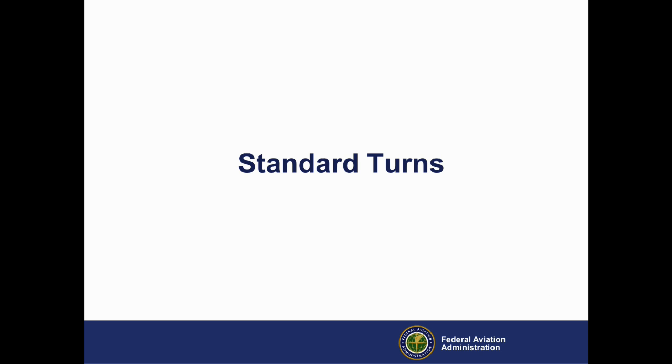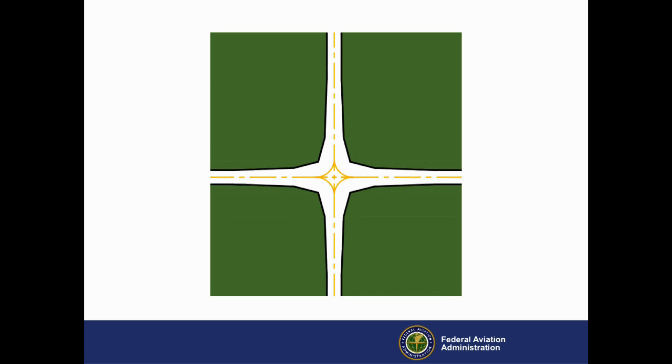Standard turns. In addition to standard straight section widths, the Airport Design AC explains why a good taxiway intersection comprises no more than three paths for an airplane to follow. Ideally, these three paths are straight ahead, a 90-degree turn to the left, and a 90-degree turn to the right, as represented on this diagram of a 90-degree four-way taxiway intersection.